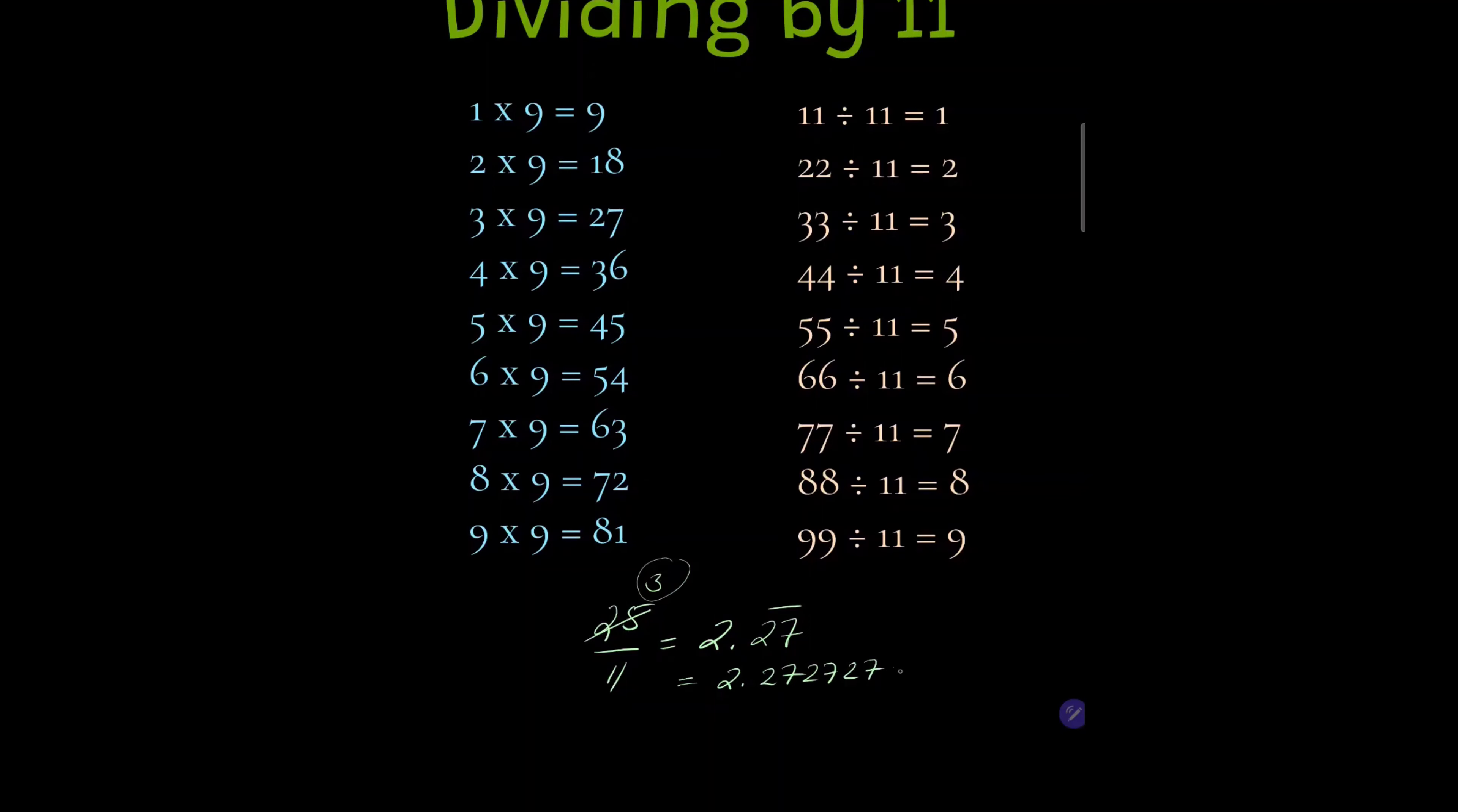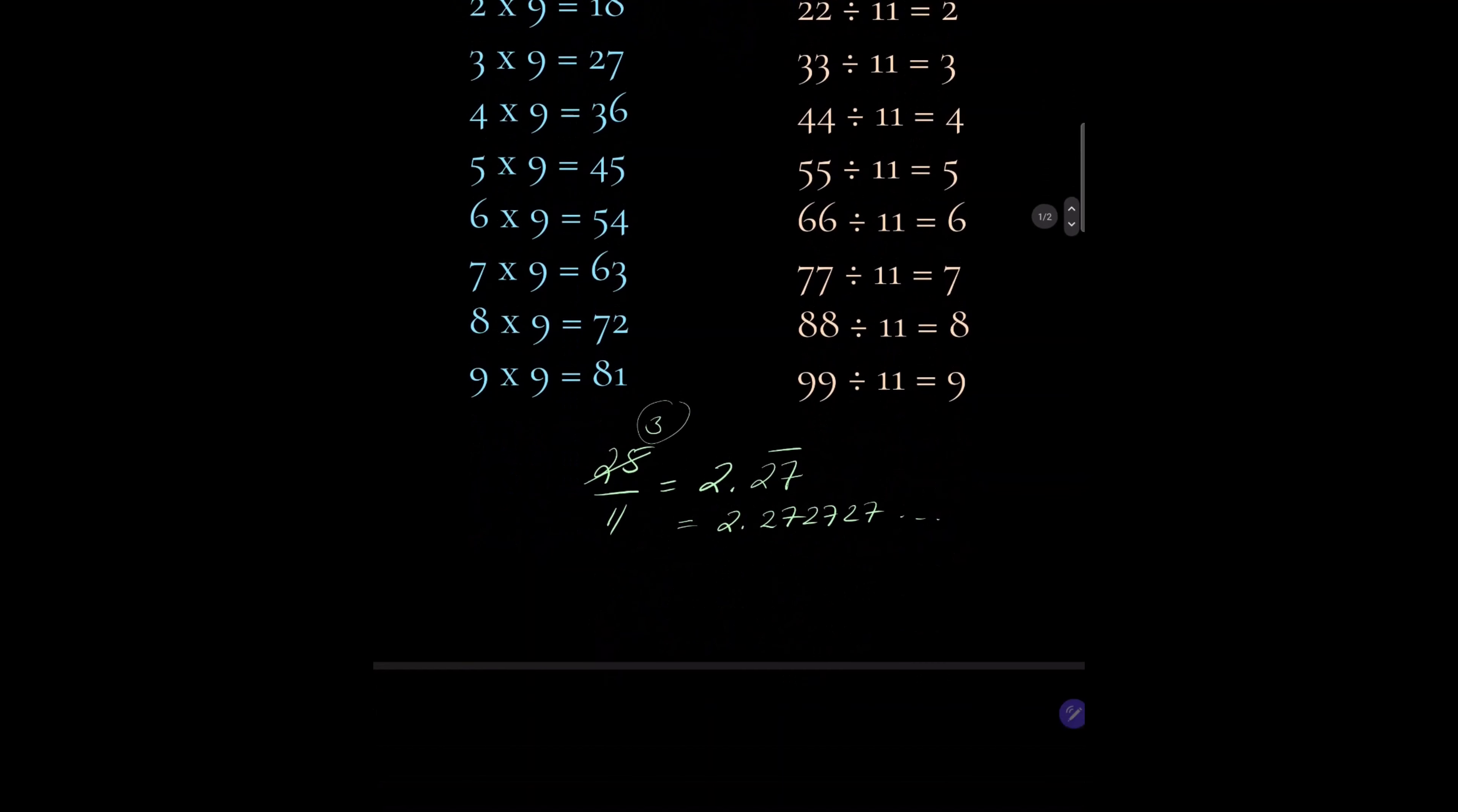Let's look at one more example: 65 divided by 11. How many 11s go into 65? And the answer is 5, since 5 times 11 is 55.